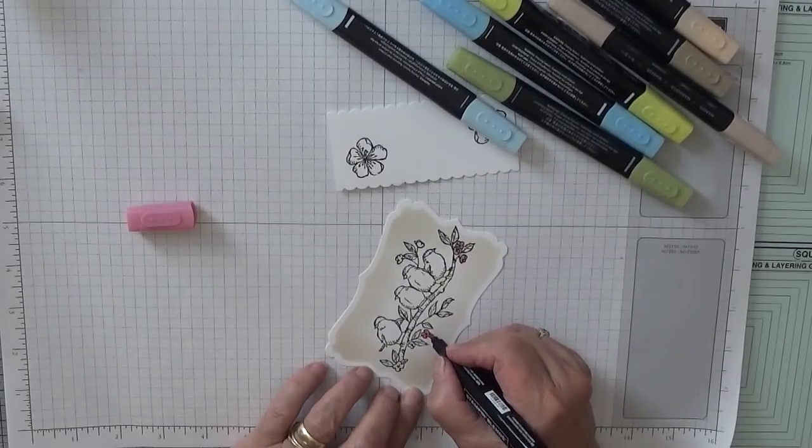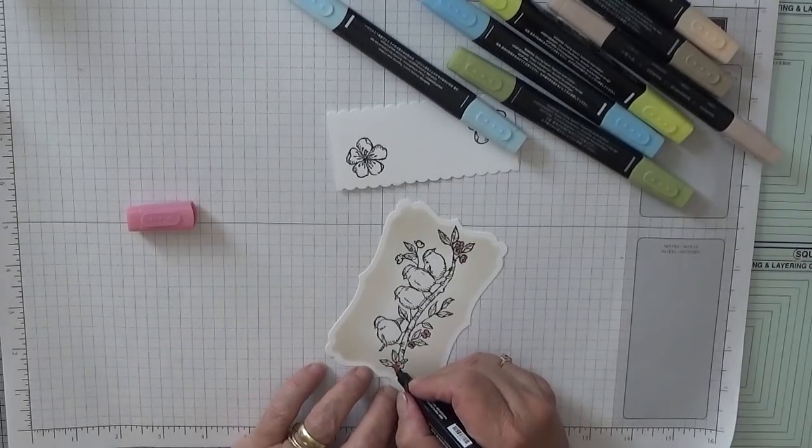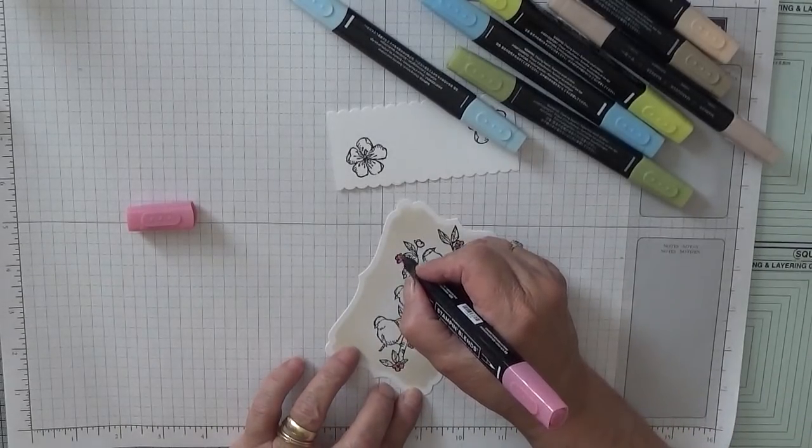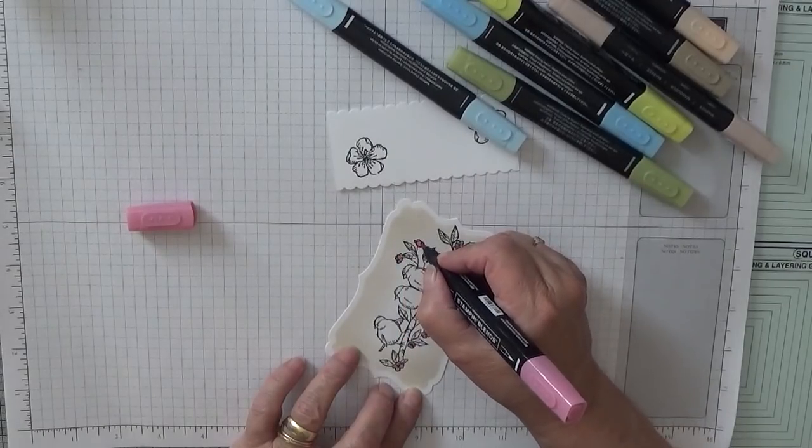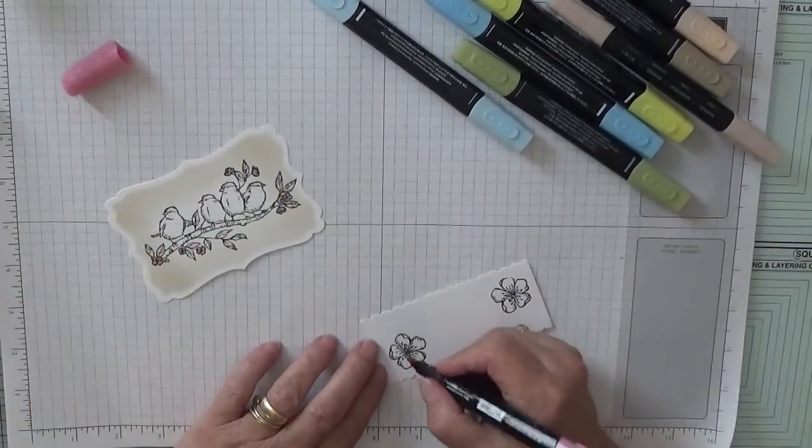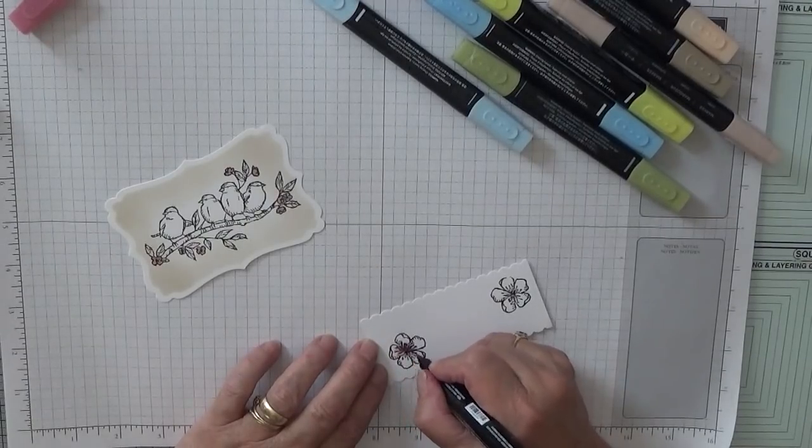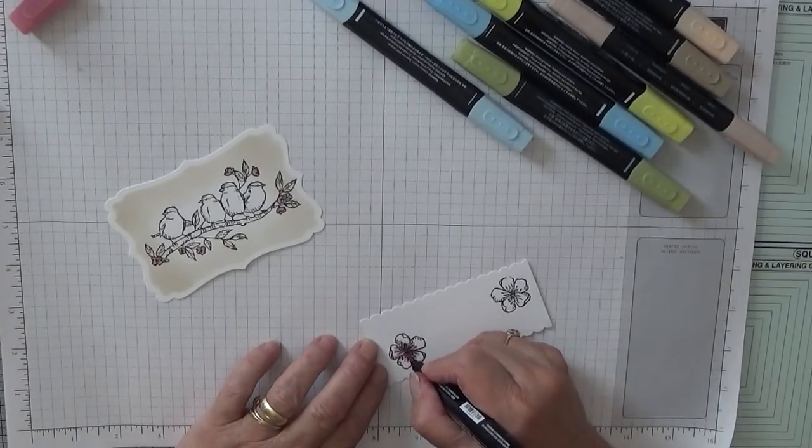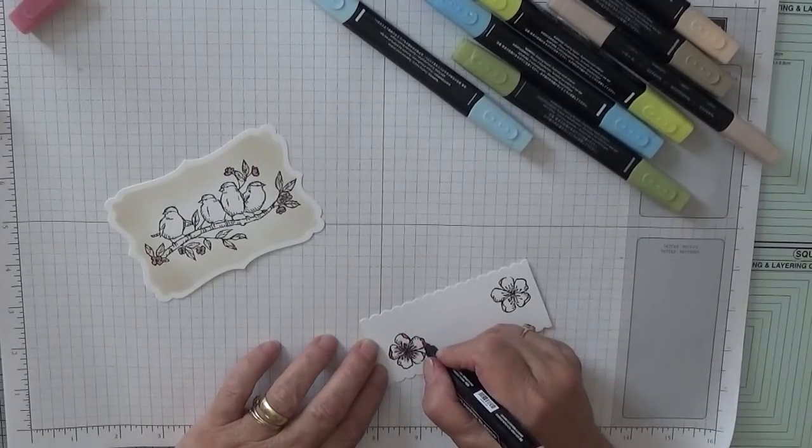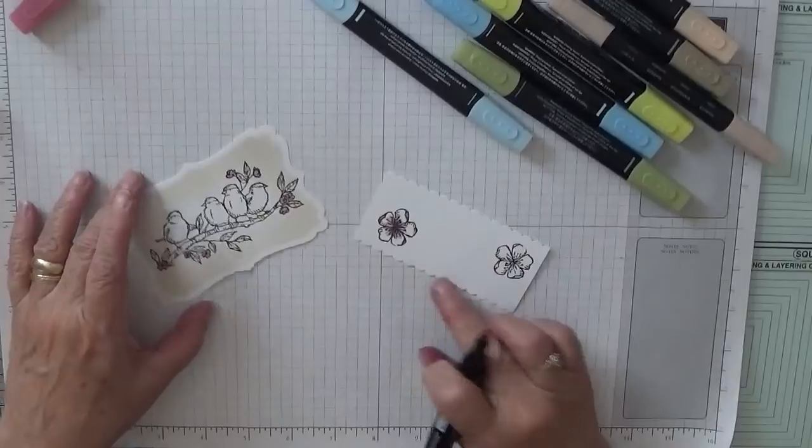This color reminds me of Sweet Sugarplum, which I have actually still got cardstock of. I do like Sweet Sugarplum, I think it's a lovely color. Right, and I'm just going to do the middle of this one and do the folded over bits like that. And I shall cut that out by hand.